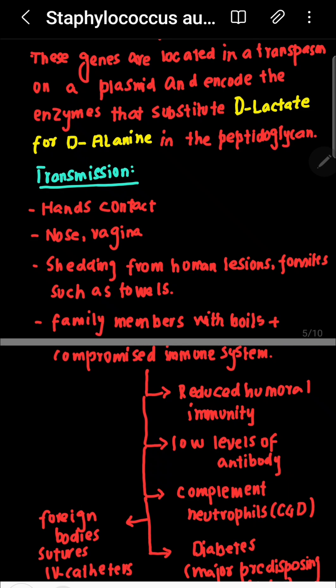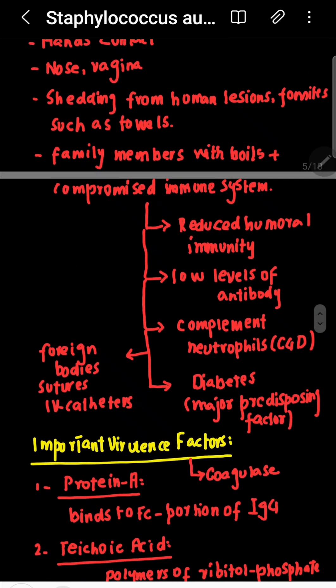People predisposed to infection include those with breaks in the skin, surgical wound infections, foreign bodies such as sutures, very low neutrophil count (e.g., chronic granulomatous disease, below 500 per microliter), IV drug users, and women who use tampons during menstruation.